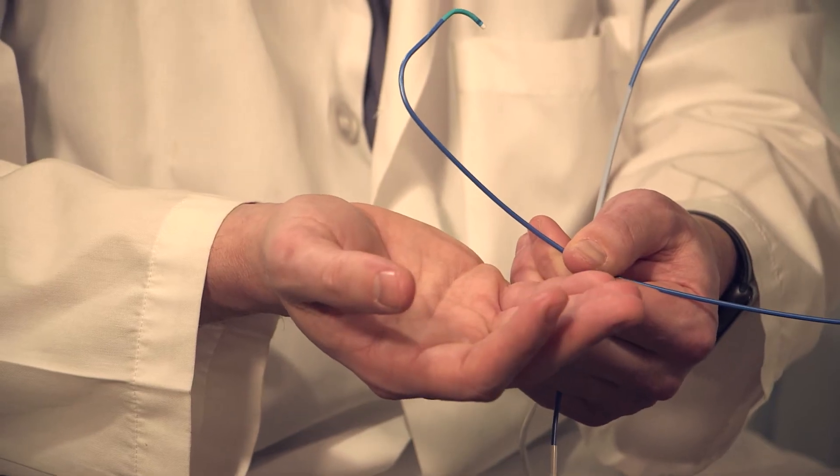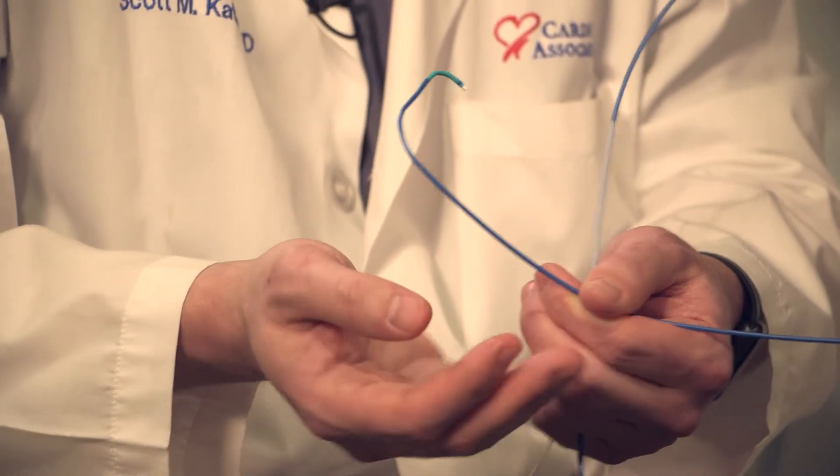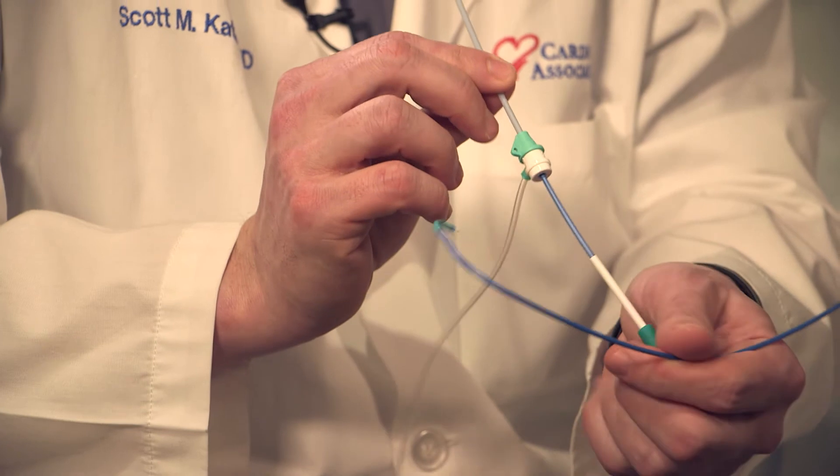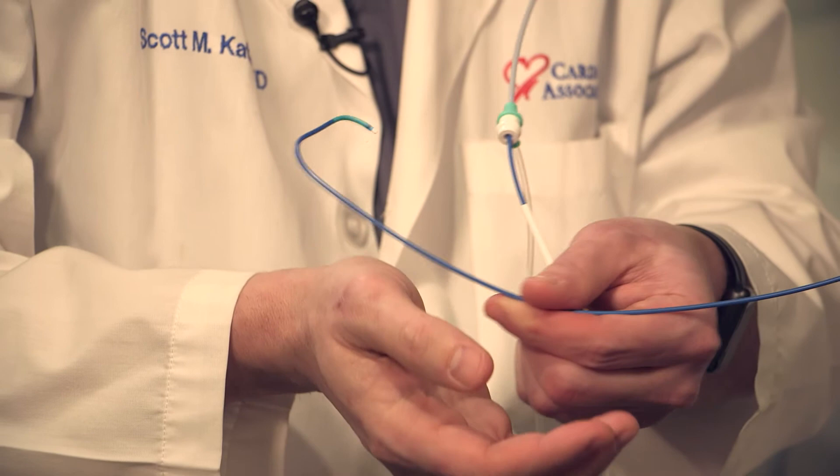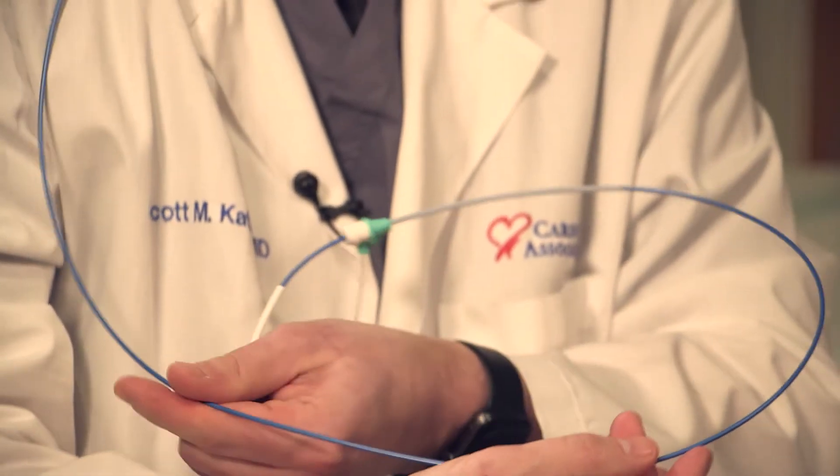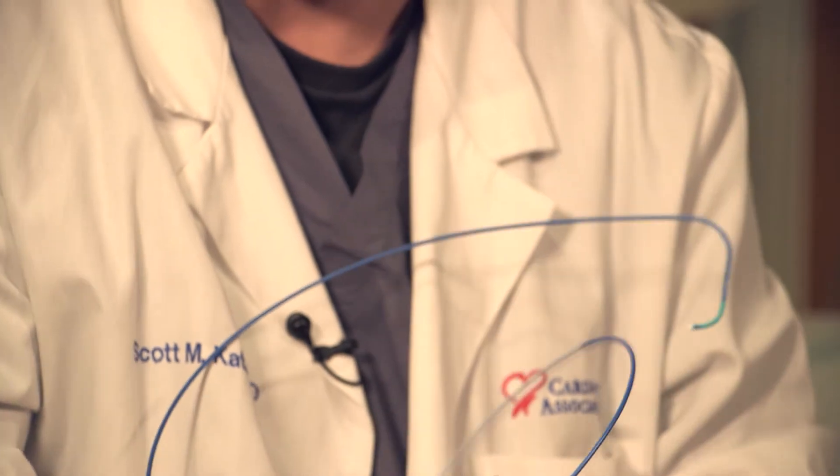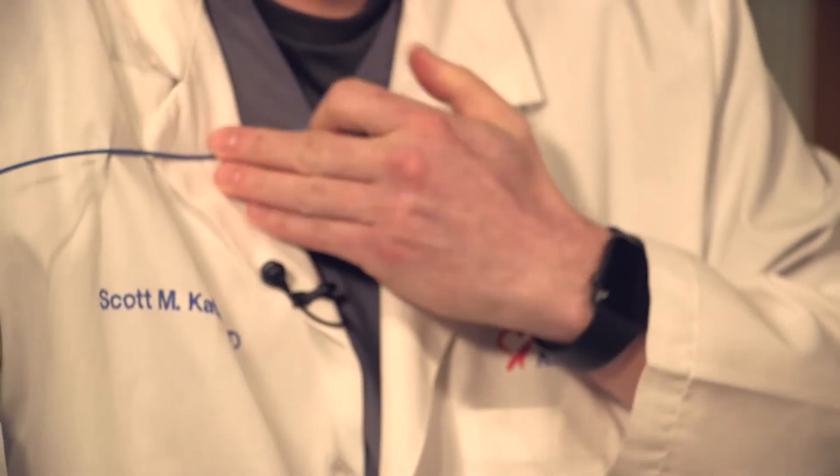Once that sheath is in, this is what a coronary catheter looks like. This will travel up the entire arm and essentially go around the shoulder and lodge right where the arteries begin to feed the heart with blood. We will inject dye through these catheters and we can see exactly where the blockage or blockages occur.